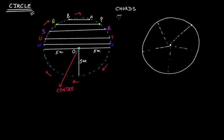Line segment AB, line segment PQ, line segment RS, line segment TU, line segment VW — these all are chords. Now, if I keep joining points and making larger and larger chords, there will come a point when a line segment will pass through the center.